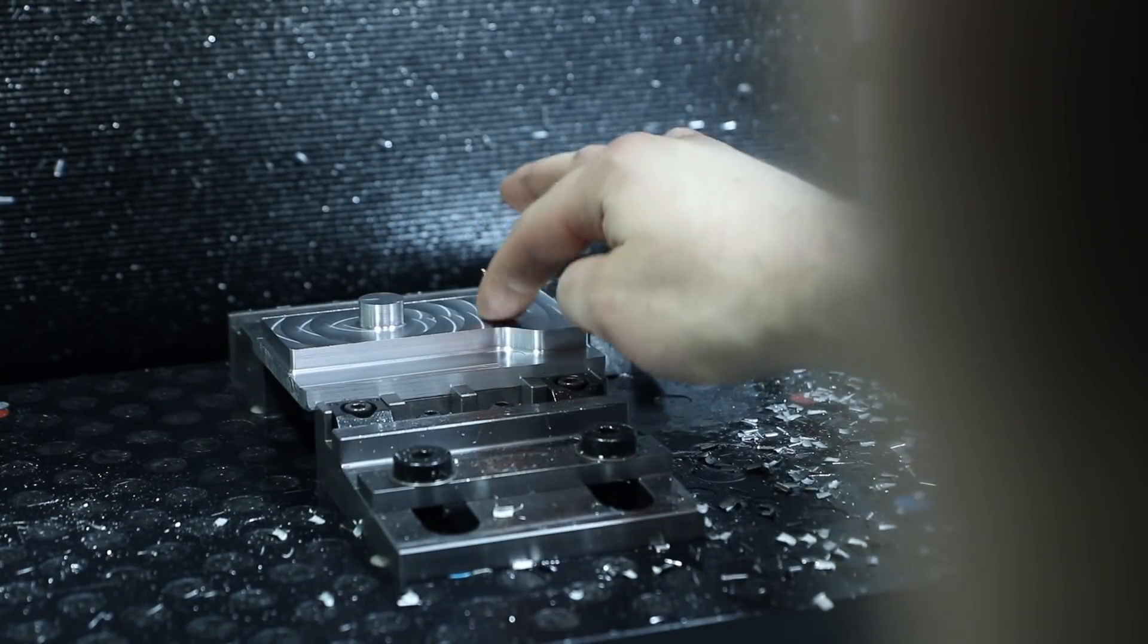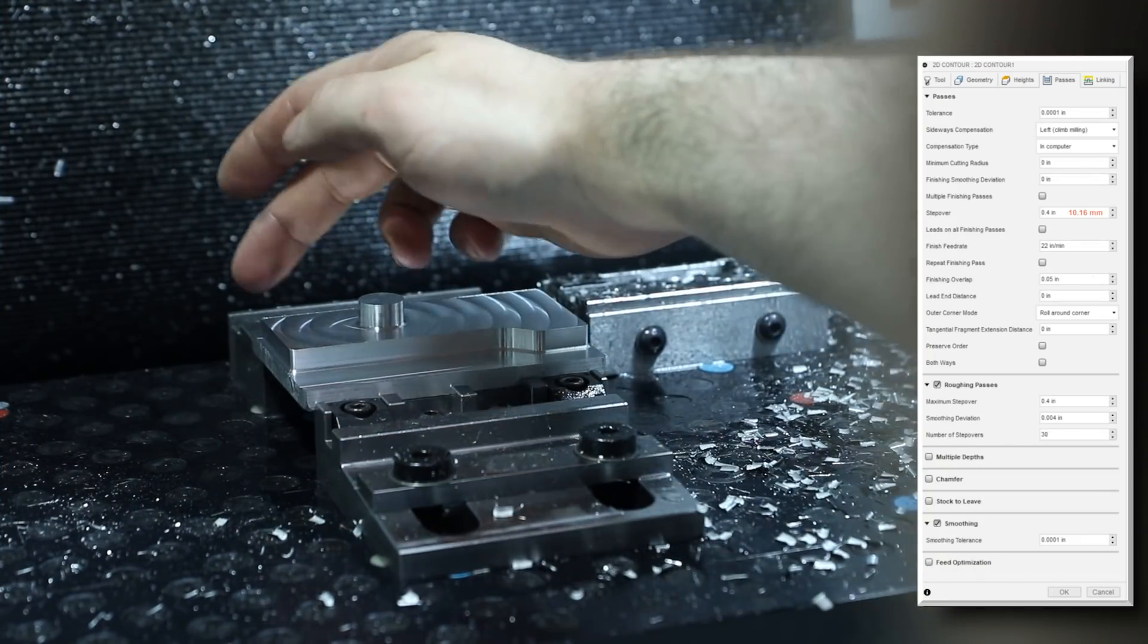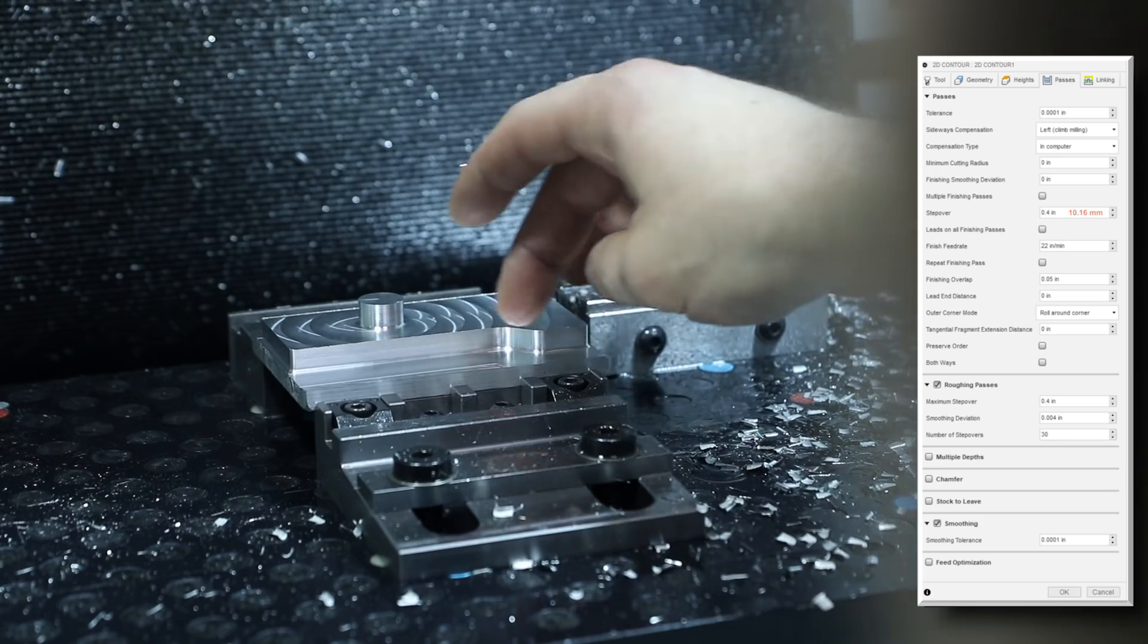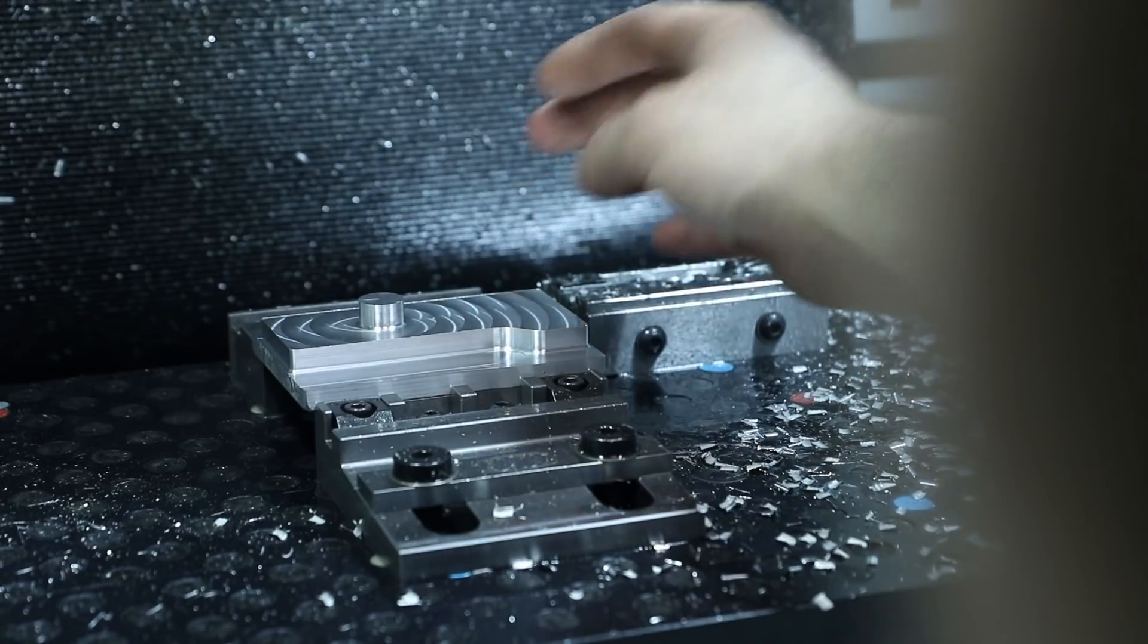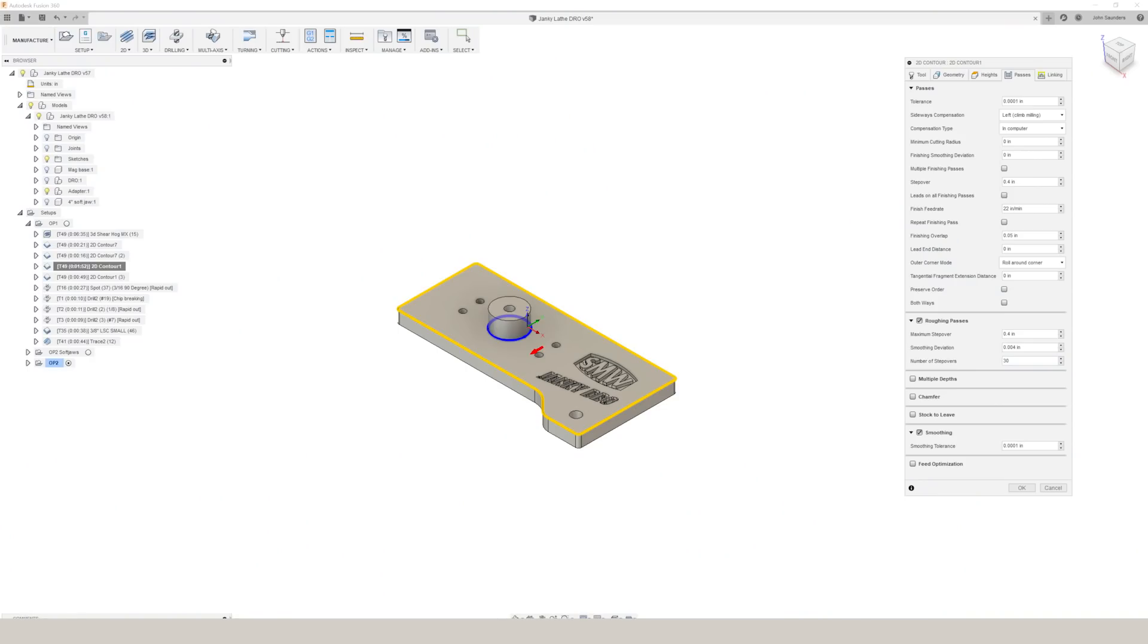This top face toolpath was a 2D contour around this circle with 0.4 inch wide roughing passes to leave that nice circular finish. And I selected the outside contour of the part as the stock so that we wouldn't be cutting a bunch of air.